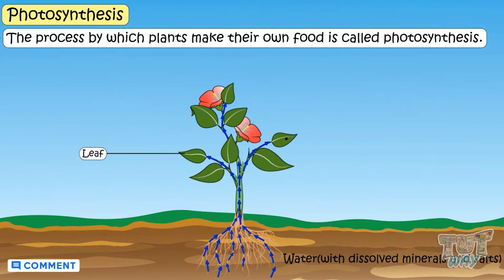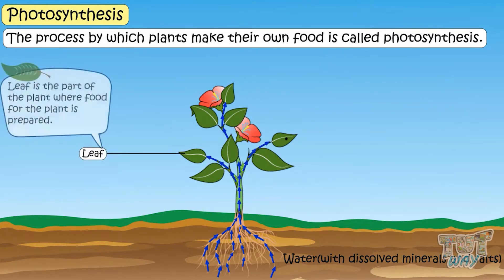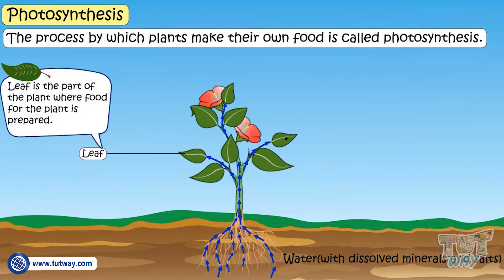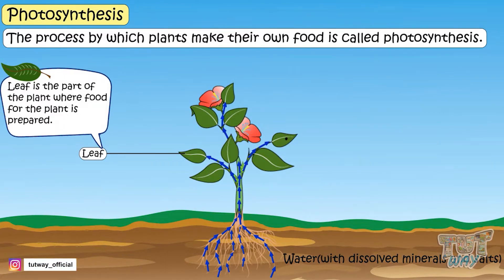The leaf is the part of the plant where food for the plant is prepared, and the process by which food is prepared by plants is called photosynthesis. Let's learn about it more!